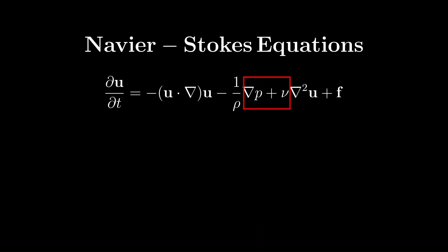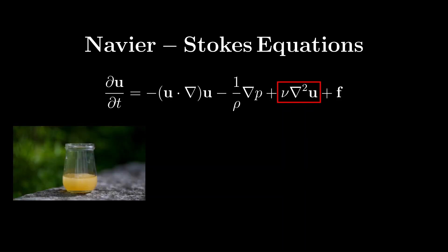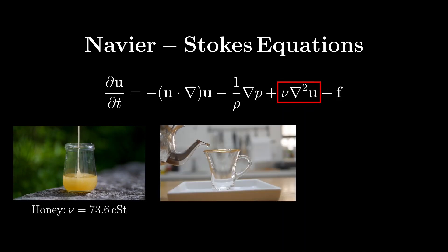The third term, nu (kinematic viscosity) times the Laplacian of the velocity field u, represents the viscosity on the fluid. When most people hear the word viscosity, they think of how thick a fluid is, or how much it seems to resist flow. The common example given is honey, which has a much higher viscosity than that of water.